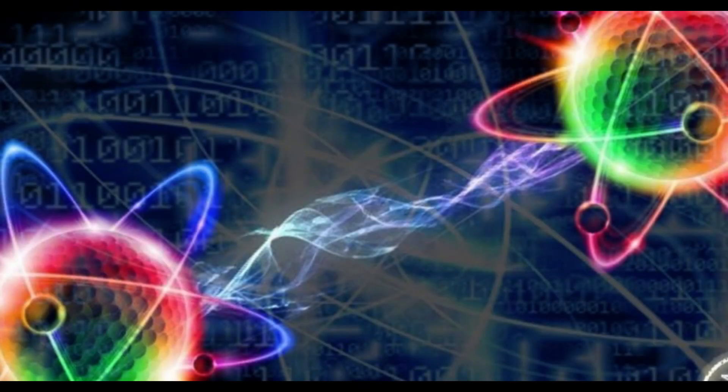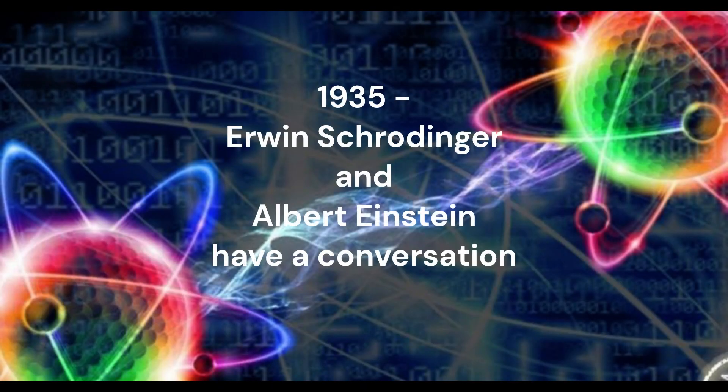This thought experiment was devised by physicist Erwin Schrödinger in 1935 in a discussion with Albert Einstein, to illustrate what Schrödinger saw as the problems of the Copenhagen interpretation of quantum mechanics. To understand Schrödinger's Cat, we must first understand some key principles of quantum physics.